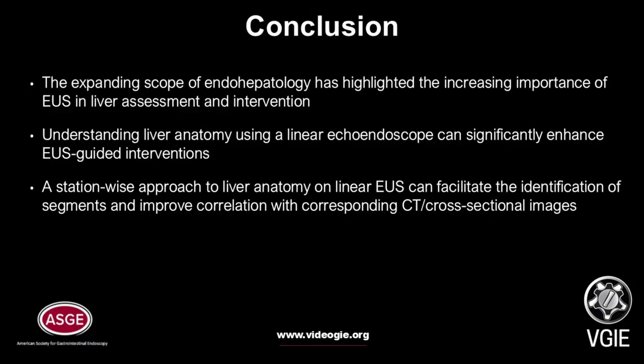In conclusion, the expanding scope of endoscopic pathology has highlighted the increasing importance of EUS in liver assessment and intervention. Understanding liver anatomy using a linear echo endoscope can significantly enhance EUS-guided interventions. A station-wise approach to liver anatomy in linear EUS can facilitate identification of segments and improve correlation with corresponding cross-sectional images.